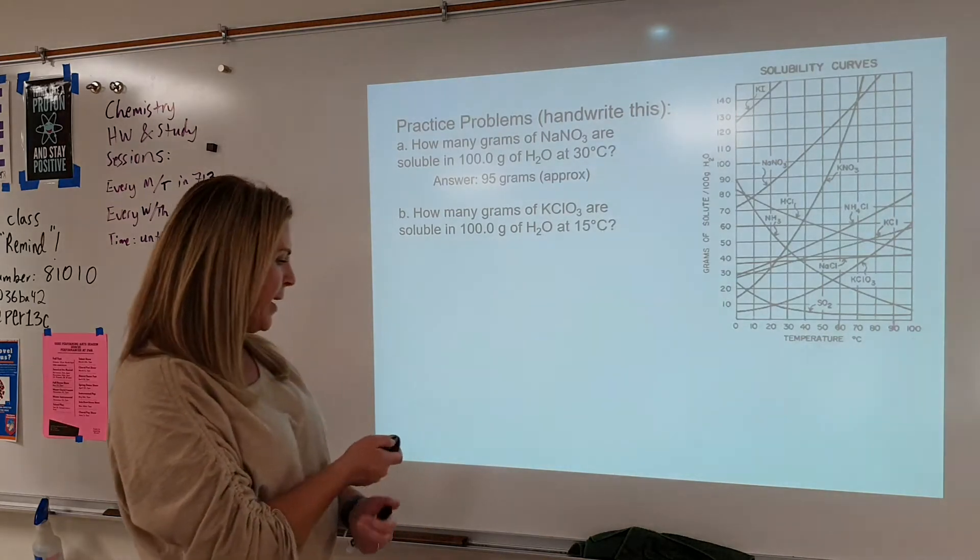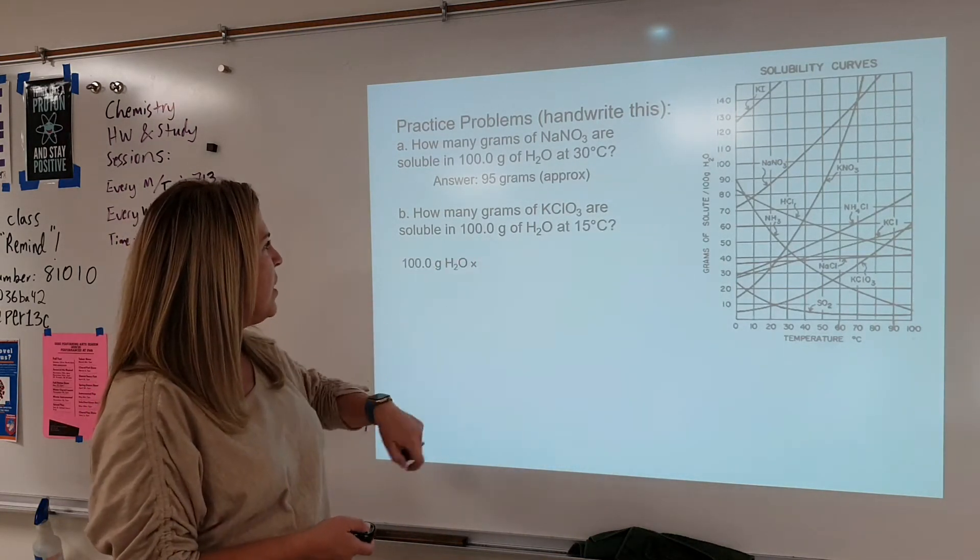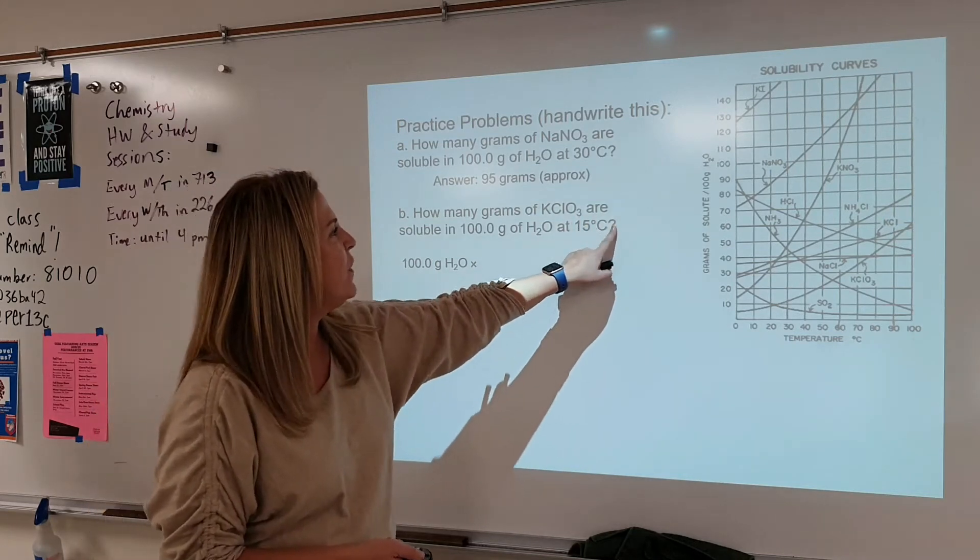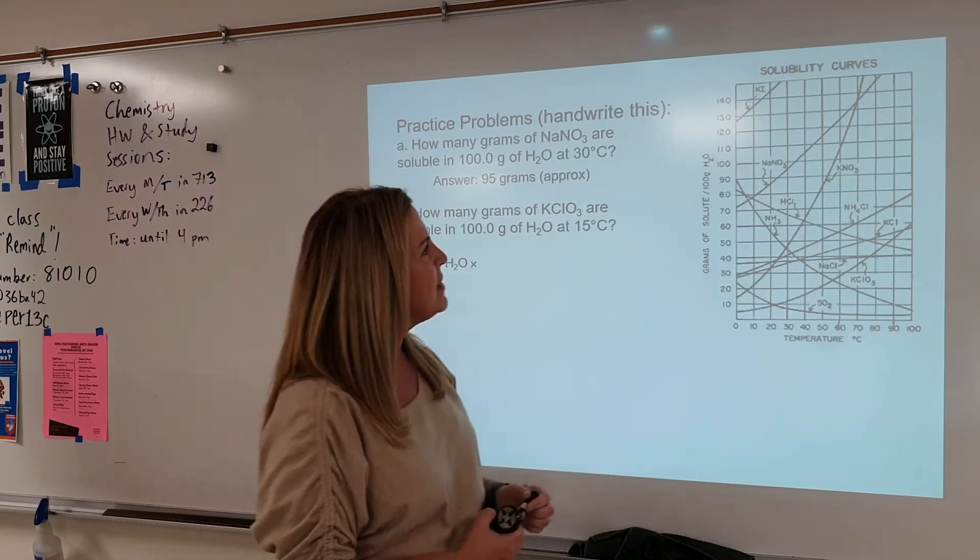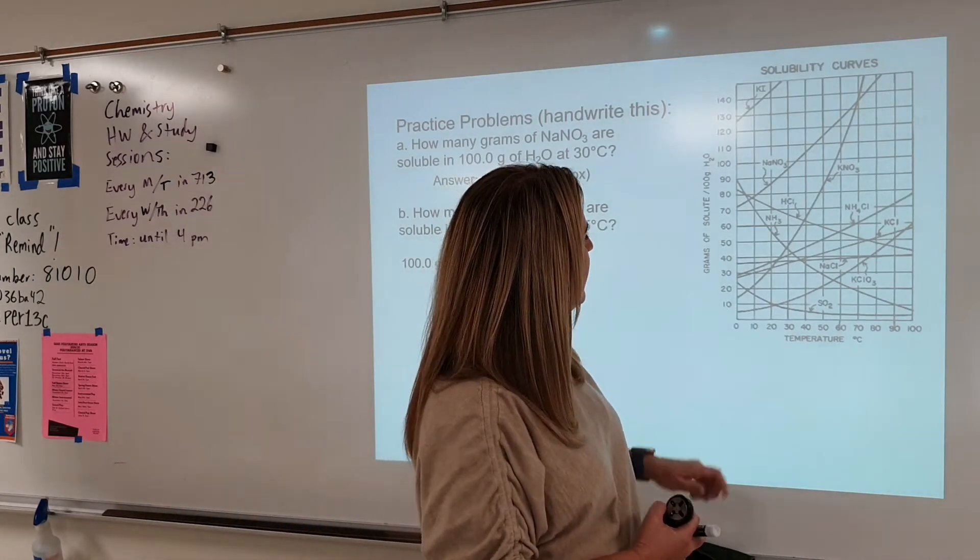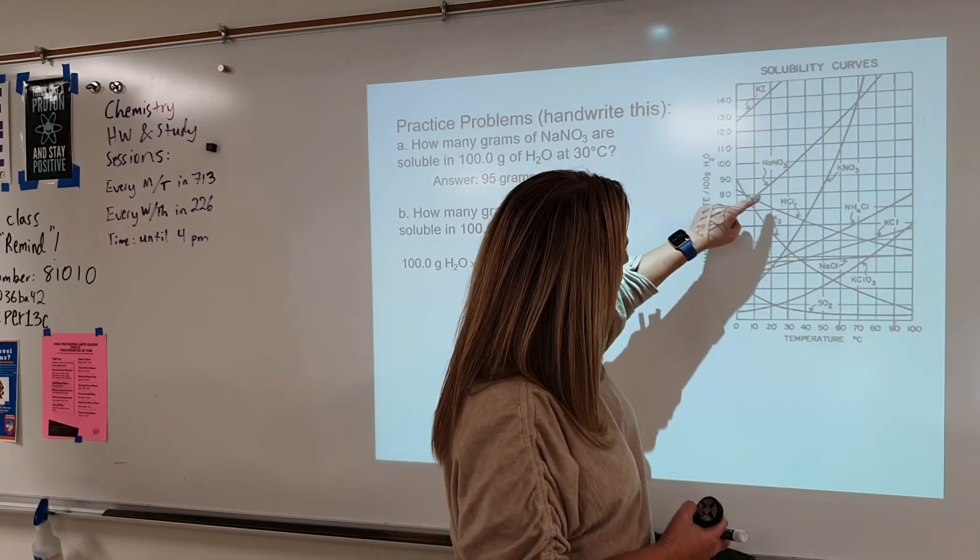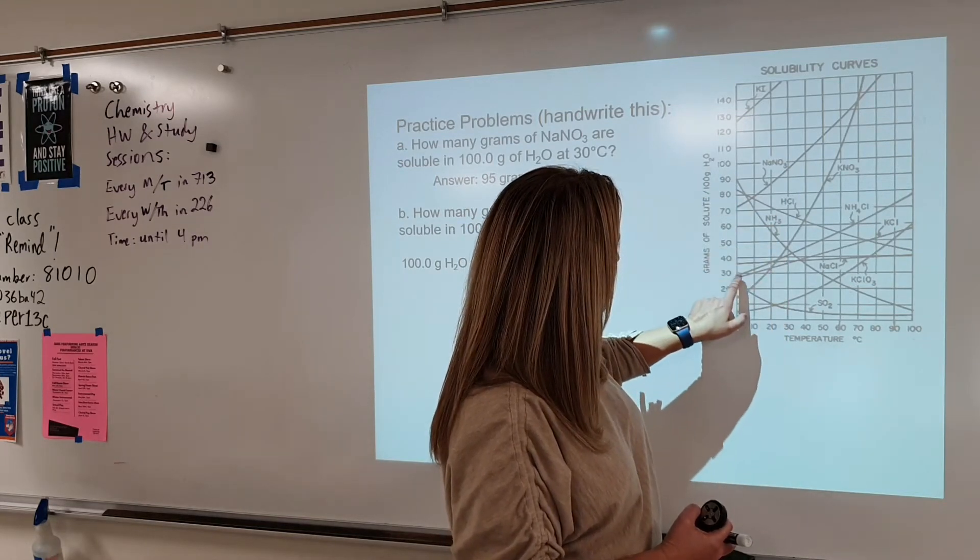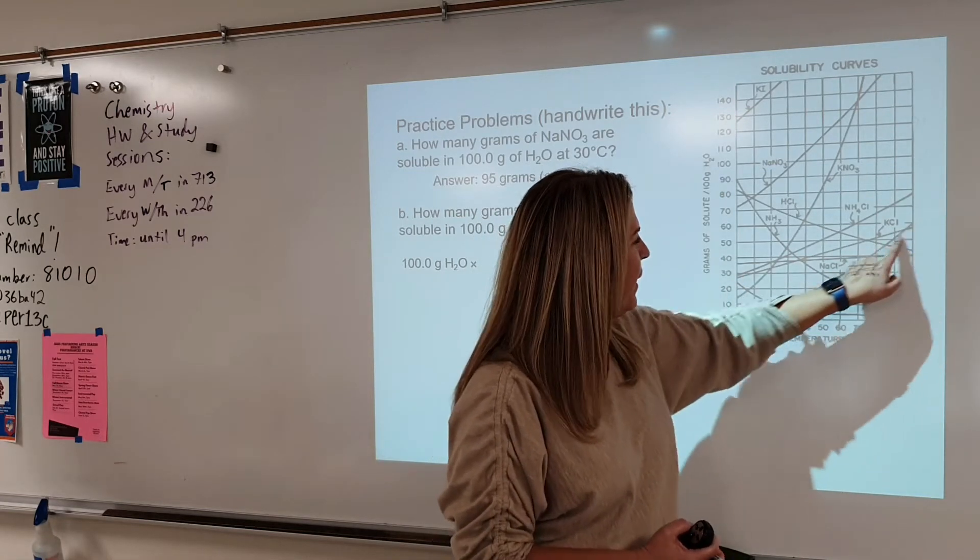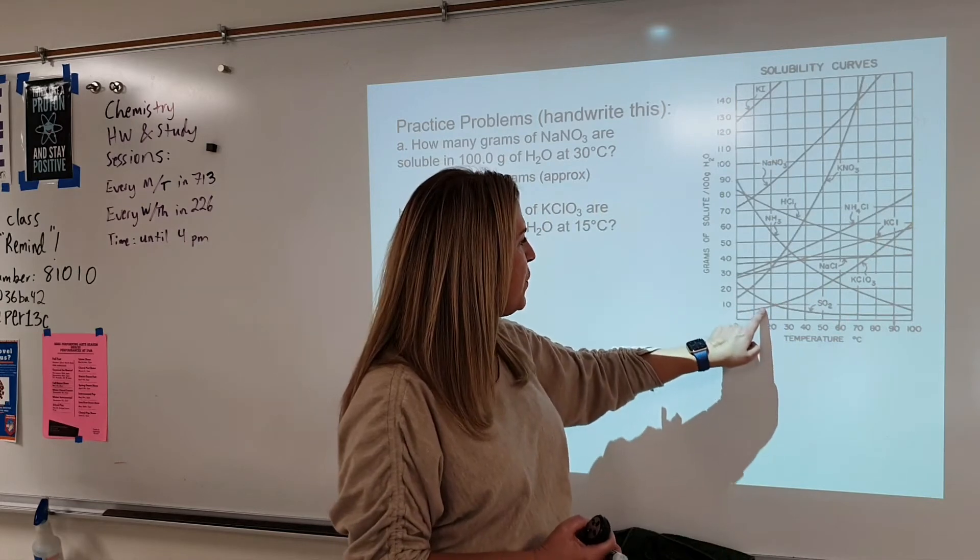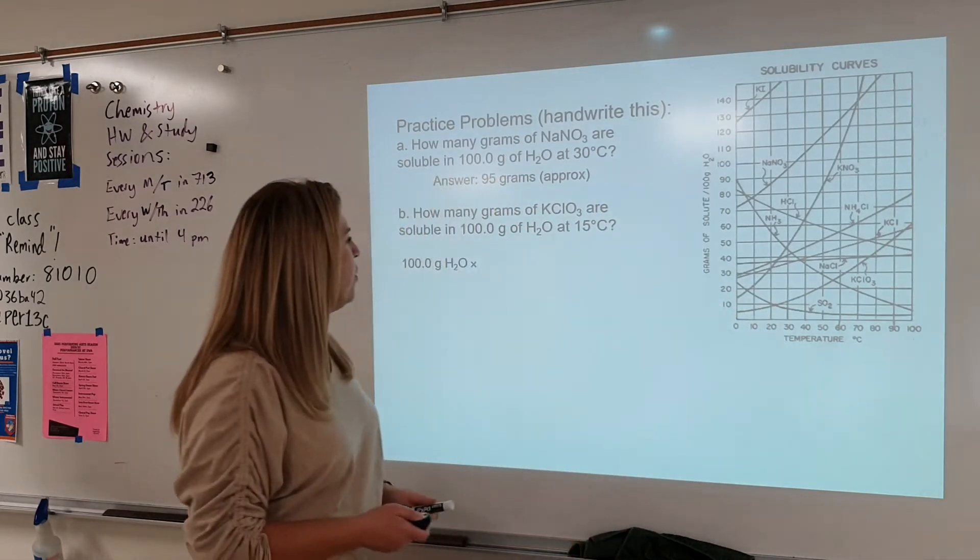Okay. So we're back and we're going to start with our 100 grams of water. You're going to look at the graph. We're going to go to 15 degrees Celsius. We're going to find the line for potassium chlorate. So let's see. KClO3. Not there. NH4. There we go. So here's the line for KClO3. Right. So we're going to go to 15 degrees Celsius. And we're going to come across here.